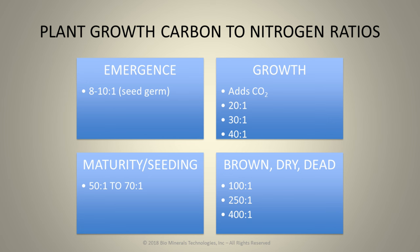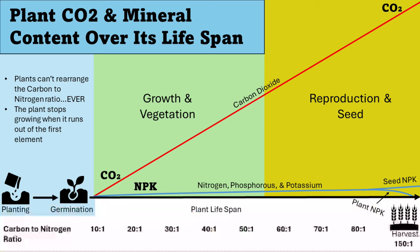And so this is the critical part that we need to understand about plant nutrition. As we look at plant CO2 and mineral content over the lifespan of the plant, we go from a very small carbon to nitrogen ratio up to a very high carbon to nitrogen ratio. As this plant grows, carbon and oxygen are required in huge ratios to NPK — and it keeps getting wider and wider and wider, and the demand increases as the plant gets older.